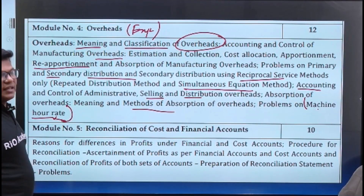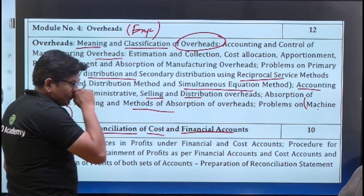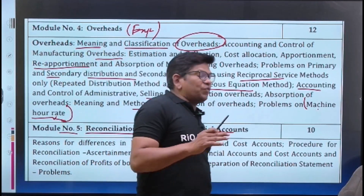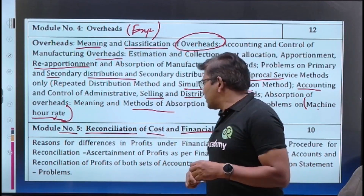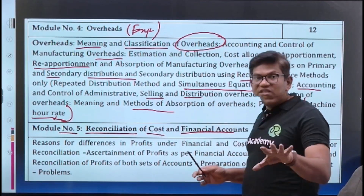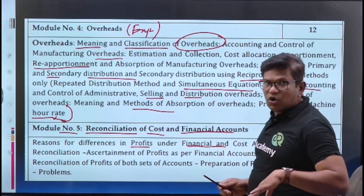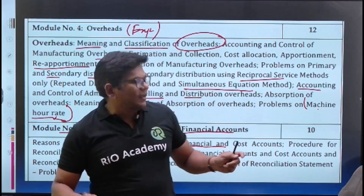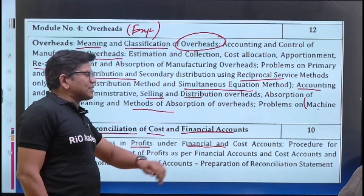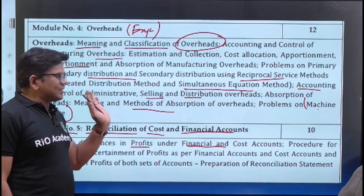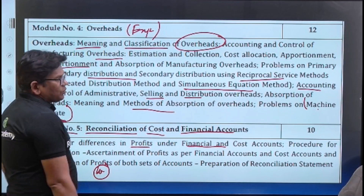The last unit is Module 5 — reconciliation of cost and financial accounting. Here we reconcile and compare cost accounting with financial accounting. There will always be differences in profit figures between the two — because financial accounting accounts for many items that cost accounting does not. We cover the procedure for reconciliation, ascertainment of profit as per financial accounts and cost accounts, and preparation of the reconciliation statement.